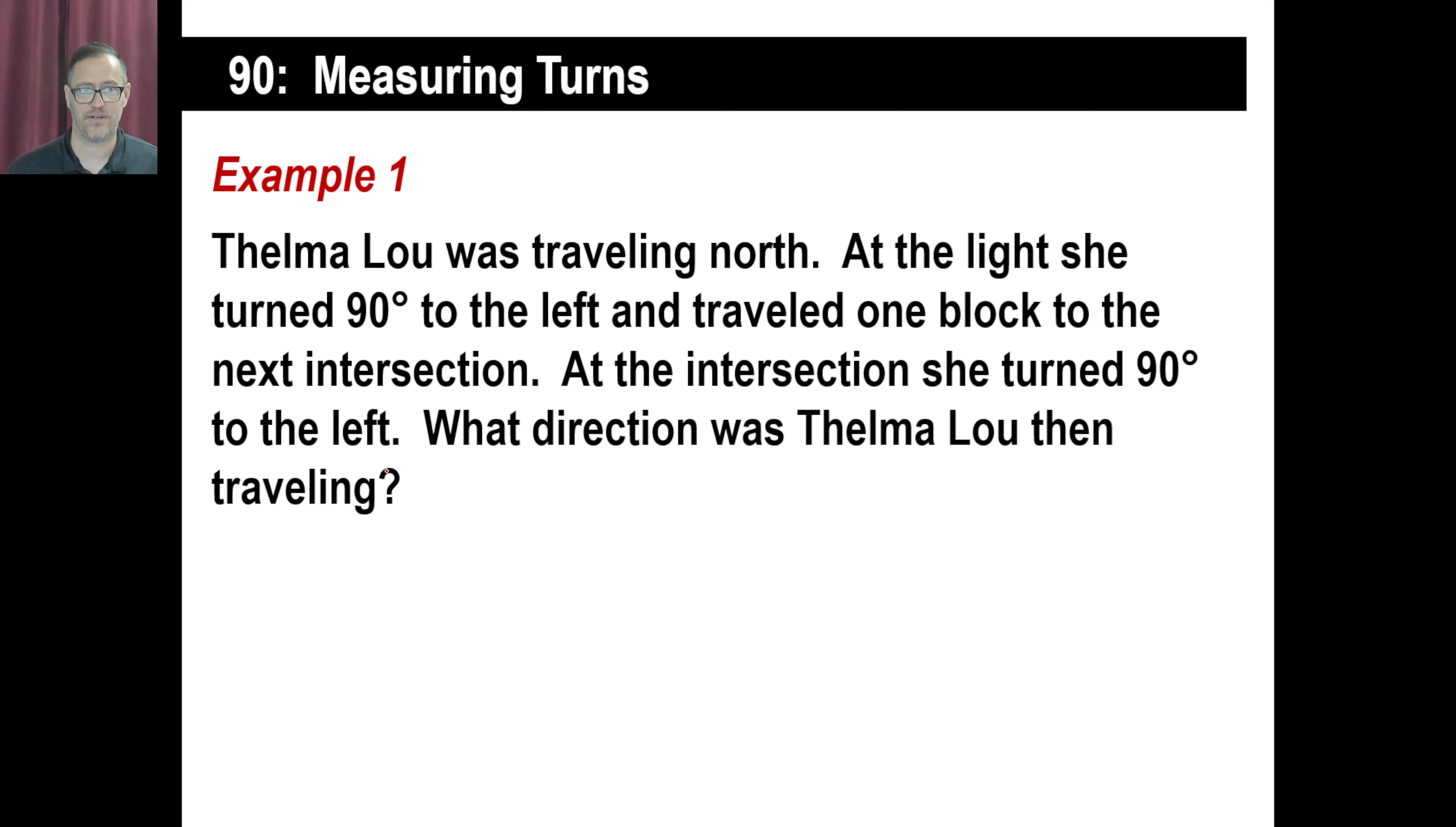Thelma Lou was traveling north. At the light, she turned 90 degrees. Well, let's just do it. Traveling north. 90 degrees to the left. In other words, this is north, going this way. 90 degrees to the left means she did a 90 degree angle right there. Then, at the intersection, she turned 90 degrees to the left. There we go. So now she's going this way.